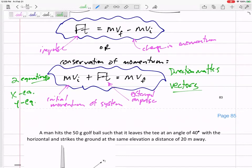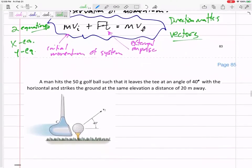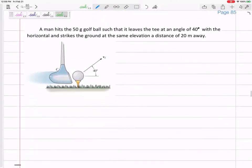Direction really matters. Let's look at this problem: a man hits a 50 gram golf ball such that it leaves the tee at an angle of 40 degrees with the horizontal and strikes the ground at the same elevation, a distance of 20 meters away. So it goes here and strikes the ground about the same height that it started from.